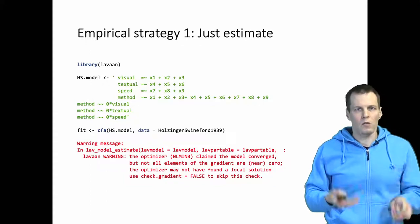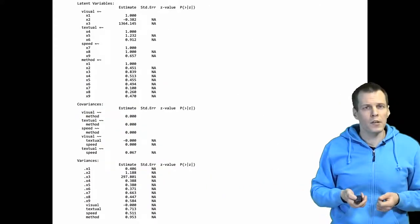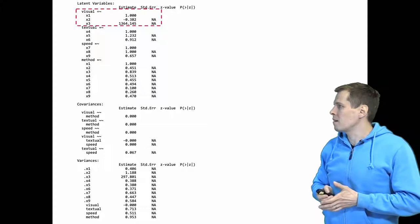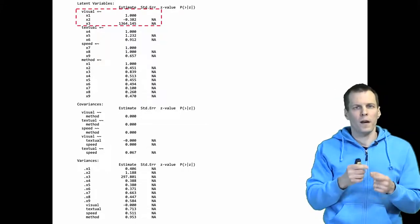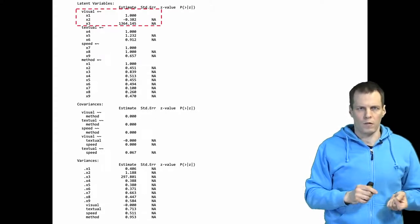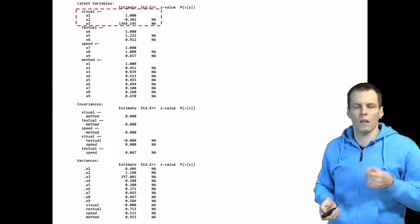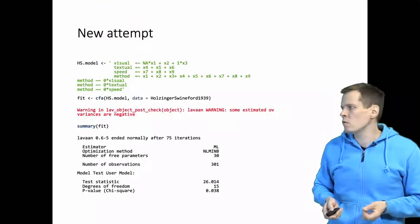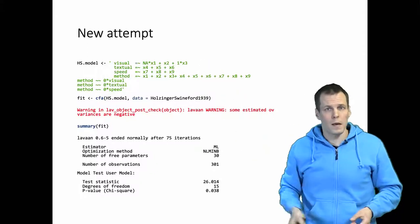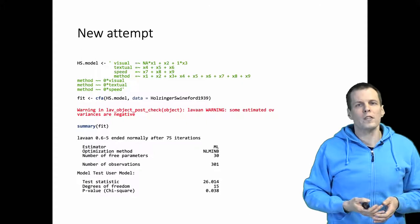A warning is something you always need to take seriously — understand what is the source of the warning. In this case we check the coefficients: the X3 loading converges to a very large number, which indicates that using X3 as the scaling indicator for the factor might be a good idea. So we free the loading of the first indicator, set it to NA, and constrain the loading of the third indicator to be one. Now we estimate — there is a warning and this is a Haywood case.